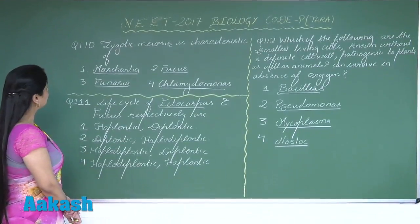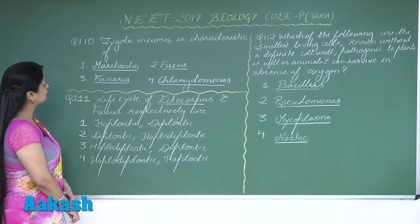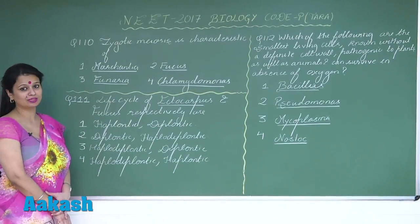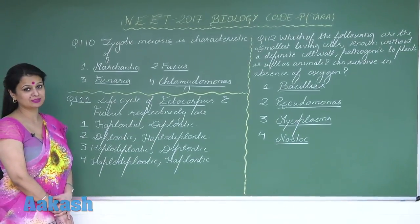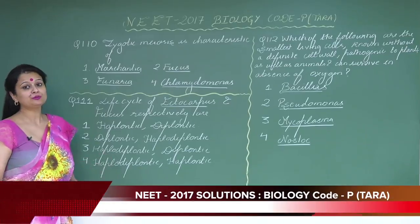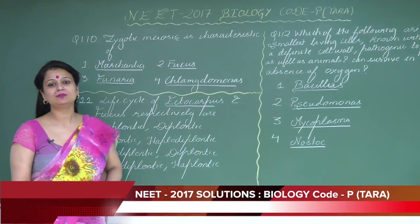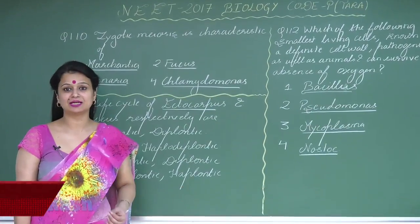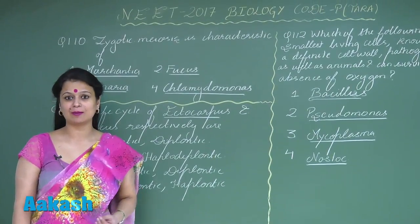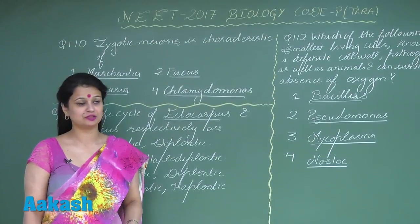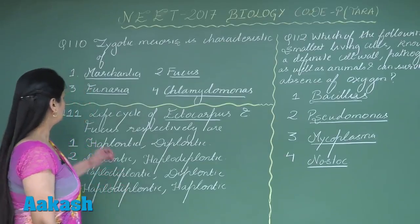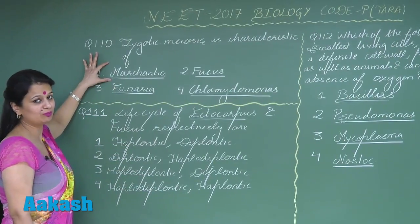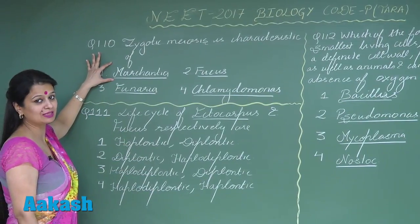In question number 110, we have to look for the option where zygotic meiosis is present. Zygotic meiosis is present in the life cycle which is haplontic in nature. Now, Marchantia has a haplodiplontic life cycle.